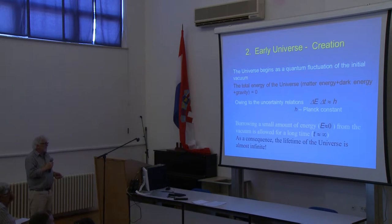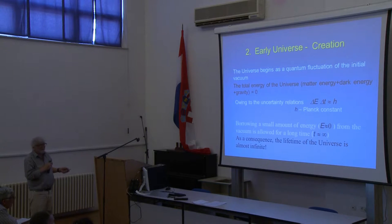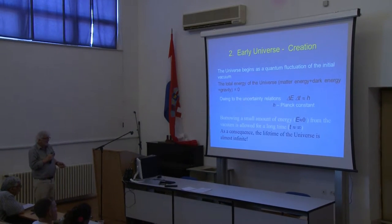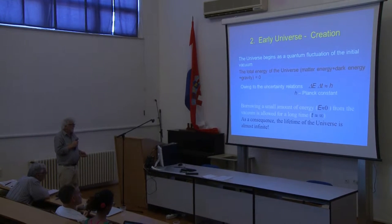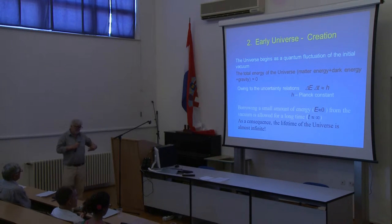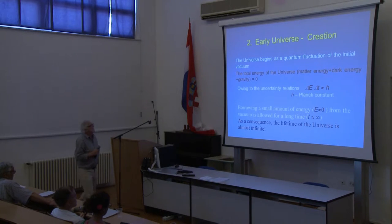Invoking quantum cosmology and quantum mechanics, and looking at the uncertainty relations — which relate the departure of energy, the small variation of energy with the variation of time, roughly equal to the Planck constant — borrowing a small amount of energy, which is really zero in this case, from the vacuum, allows us to stay in this type of universe for an infinite amount of time, making the universe quite old. Before the beginning, we had nothing, and then, out of nothing from this quantum mechanical process, we created our universe.